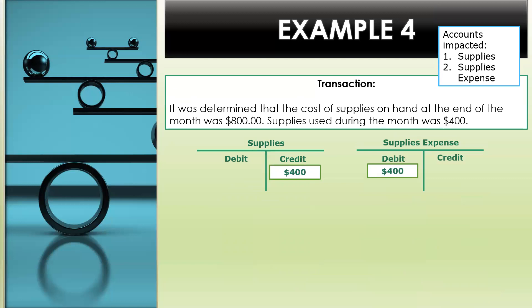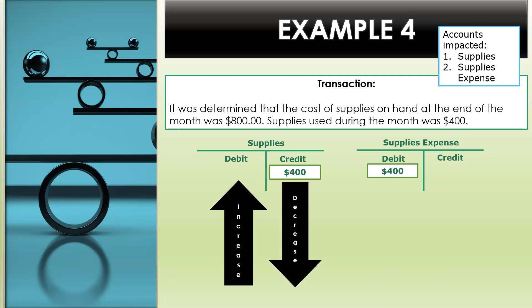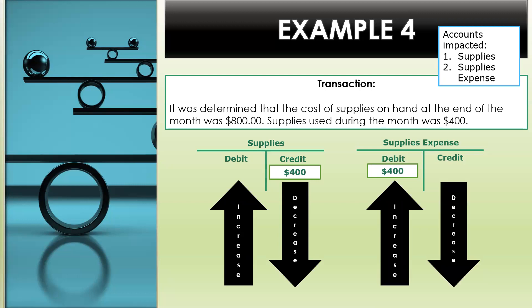Example four — transaction: it was determined that the cost of supplies on hand at the end of the month was $800; supplies used during the month was $400. That $400 is the amount we're going to use. This $400 impacts the supplies and the supplies expense account. For the supplies account, we're going to credit $400; this will decrease the supplies account. For supplies expense, we will debit $400, and this will increase the supplies expense account.